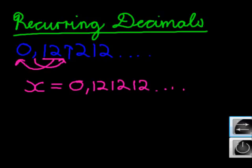Now I'm going to multiply with 100 so that I can move my comma one space, two spaces. So 100 times x, 100 times x is then equal to, on this side, it moves two spaces. So now I get 1, 2, 12 comma